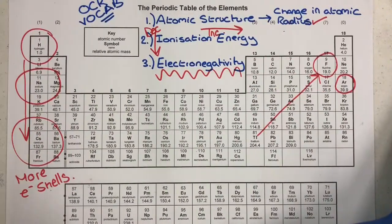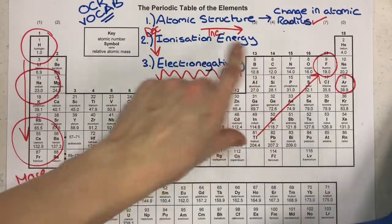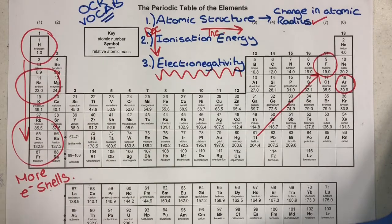I hope that gives you a nice summary of all the different general periodic trends with regards to atomic radius, ionization energy, and electronegativity for your chemistry A level. I'll leave you to the rest of our playlist. Happy revising!